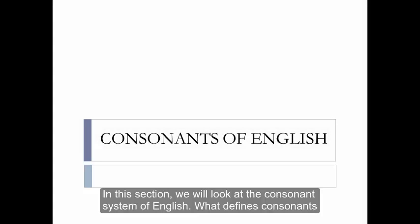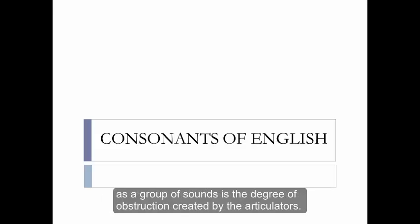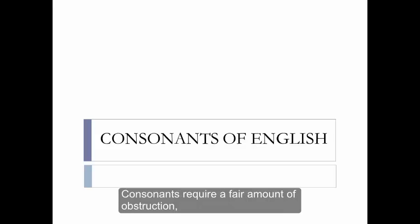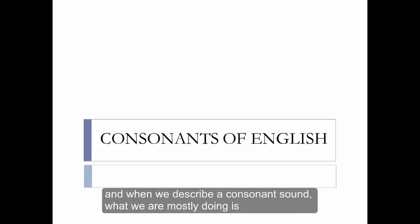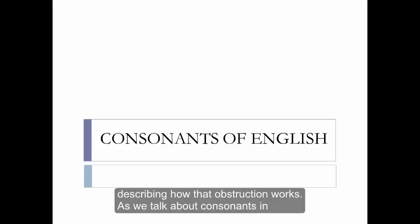In this section, we'll look at the consonant system of English. What defines consonants as a group of sounds is the degree of obstruction created by the articulators. Consonants require a fair amount of obstruction, and when we describe a consonant sound, what we're mostly doing is describing how that obstruction works.